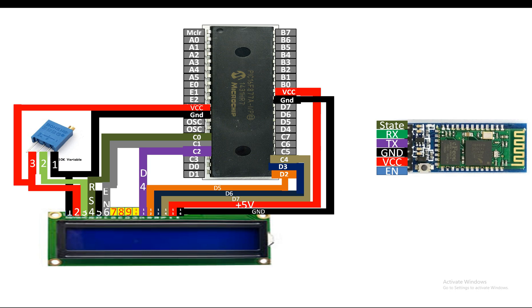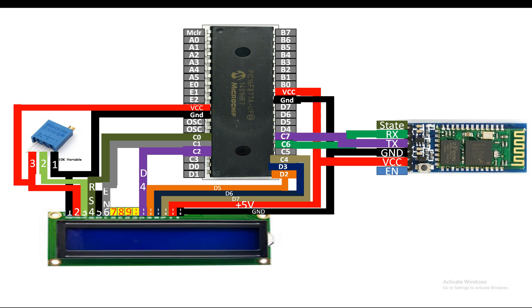In my previous video — link will be in the description — I taught you how to change the settings of the HC05 using the enable pin by connecting it to 5V. In this video we will use those settings from the previous video. To wire it: connect the RX pin of the HC05 to the TX pin of the PIC (pin 25, C6). Connect the TX pin of the HC05 to the RX pin of the PIC (pin 26, C7). Ground goes to ground, VCC to VCC.